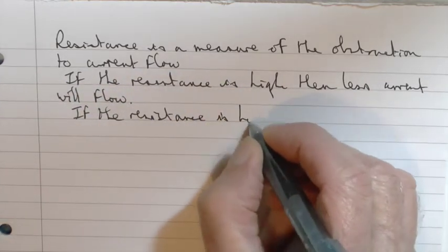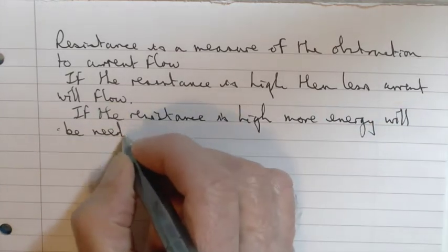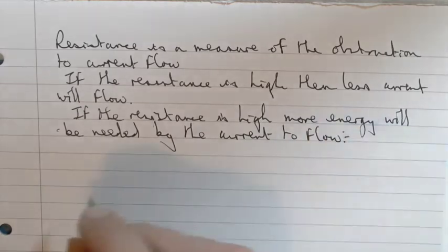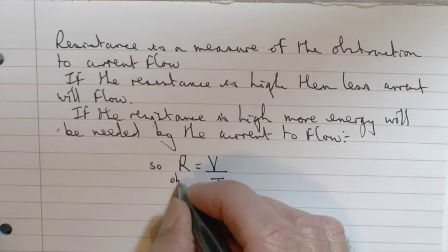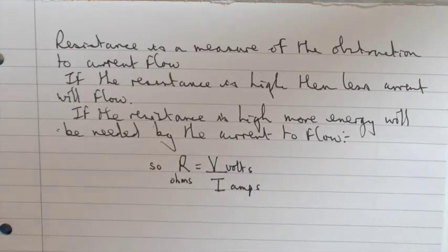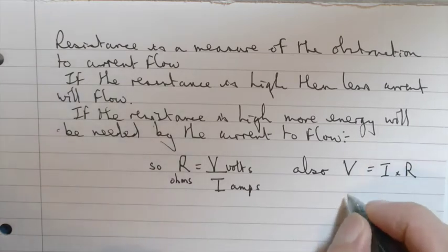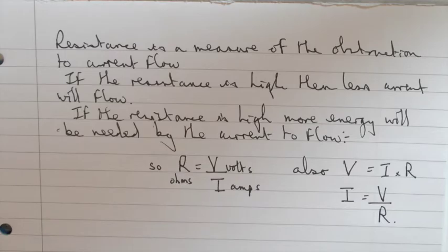The measurement of resistance is therefore a ratio of the voltage potential difference to the current. In equation form, the resistance measured in ohms is equal to the voltage in volts divided by the current in amps. This equation can also be rearranged so that either the voltage or the current is the subject of the equation.